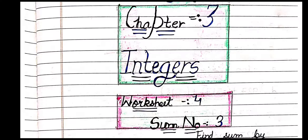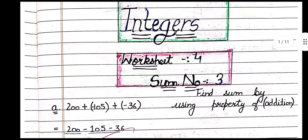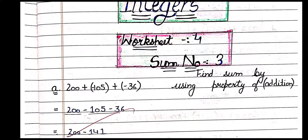Good evening everyone. Today this is one PDF of integers, Chapter 3, Integers, Class 6 DAV Maths. Worksheet 4, sum number 3 — that is addition of integers. Addition of integers when integers are given by using the property of addition.